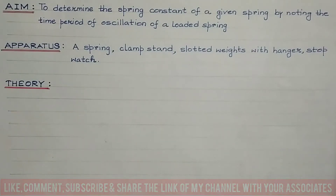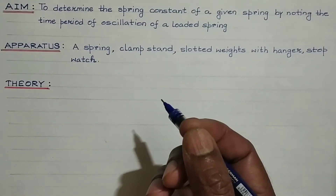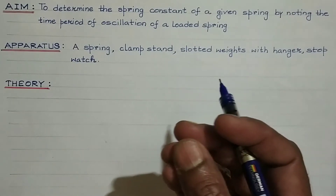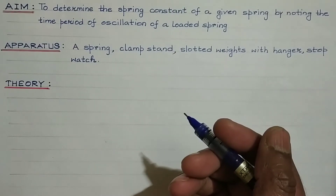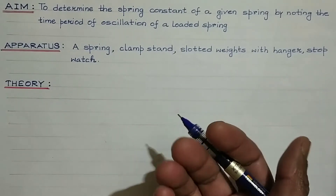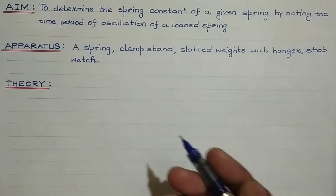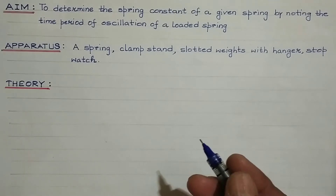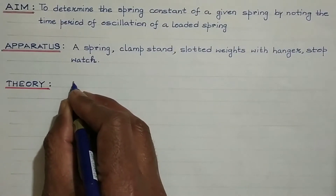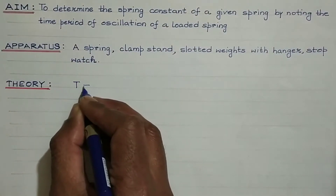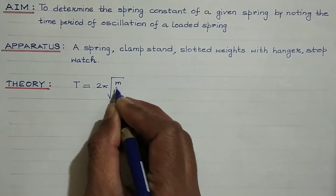In theory, if a body is disturbed from its mean position and executes vibration such that its acceleration is always directly proportional to its displacement and is always directed towards the mean position, then the body executes simple harmonic motion. In the case of a loaded spring, the time period is given by T equals 2π times the square root of m divided by k.